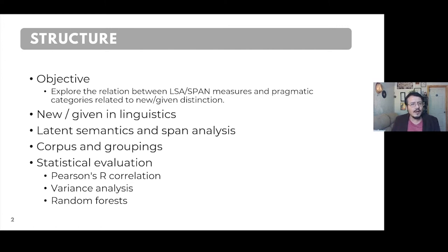Instead of trying to solve the big issue about what is new given in a text, we reduce the problem to explore if the measurements obtained through LSA and SPAN have any correlation with these linguistic concepts present in the noun phrases. The contribution of this research is to state if we can use these measures to create a method for automatic identification of linguistic categories that theoretically are related to the new given distinction.